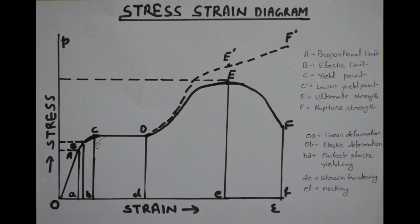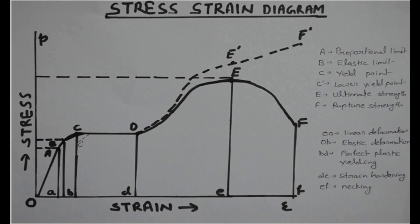The stress strain diagram represents the relationship between stress and strain for different material. You can see a tensile test diagram for structural steel. This is the stress strain diagram for the structural steel where the stress is plotted on vertical axis and the strain is plotted along horizontal axis.